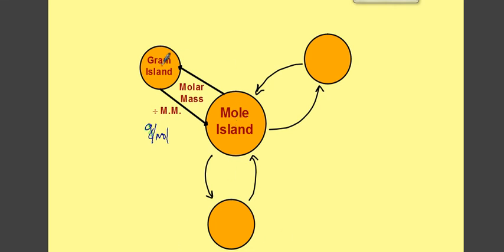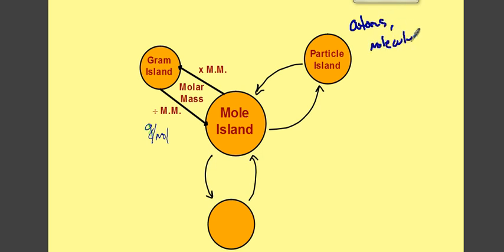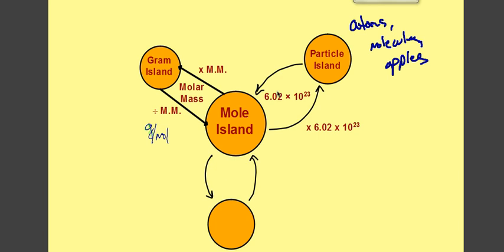If we want to go from Mole Island to Gram Island, we multiply by the molar mass to figure out how many grams we have. The next island is Particle Island — the particles we're talking about are atoms, molecules, or individual items. If we want to go from Mole Island to Particle Island, we multiply by Avogadro's number (6.02 × 10²³). And if we're going from Particle Island back to Mole Island, we divide by Avogadro's number.